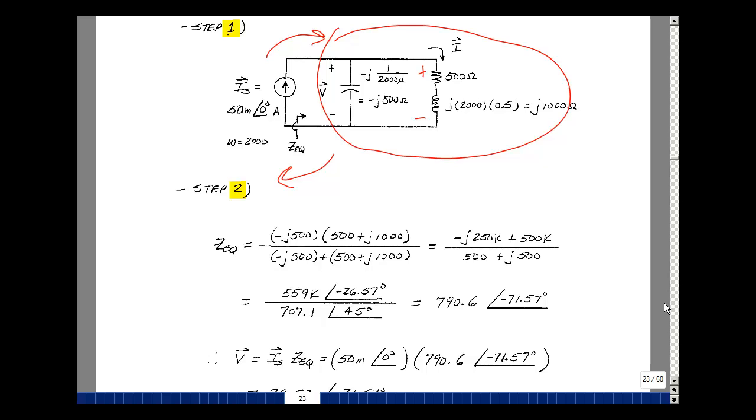We'll call it the impedance current divider. So if I want the current in this element, I'll take the other impedance over the sum of the two times the current that's coming in. And that's on the next page.